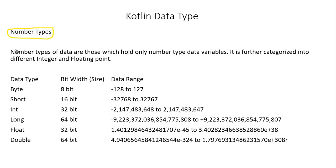So what is the numbers data type? Number type of data are those which hold only numbers — like 0, 1, 2, 3, 4. It is further categorized into two types: integer and floating point.